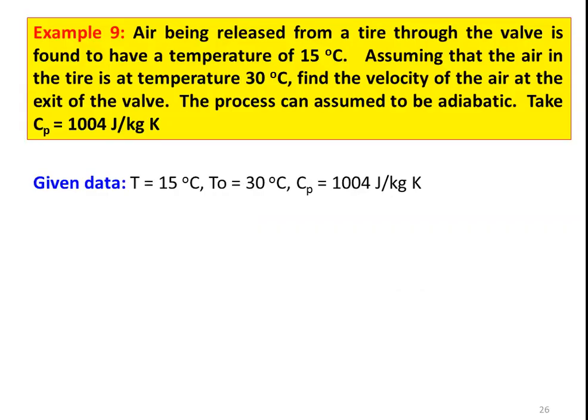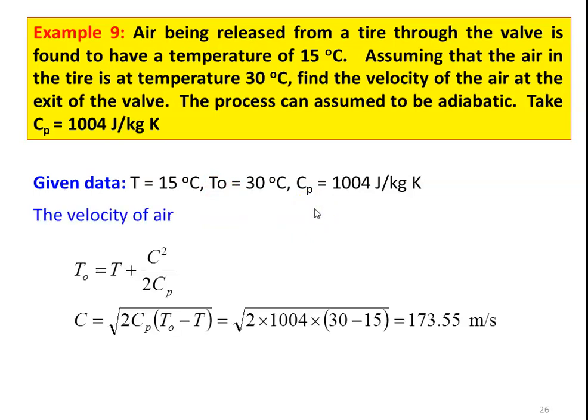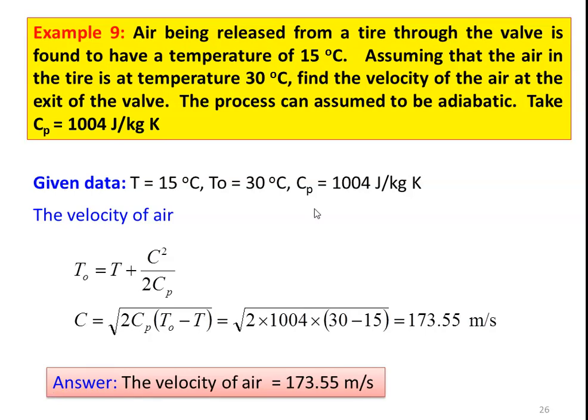Example 9: Air being released from a tire through the valve is found to have a temperature of 50°C. Assume that the air in the tire is at a temperature of 30°C. Find the velocity of the air at the exit of the valve. The process can be assumed to be adiabatic. Take Cₚ = 1004 J/kg·K. From the definition of stagnation temperature, T₀ = T + C²/2Cₚ, rearranging: C = √(2Cₚ(T₀ − T)) = √(2 × 1004 × (30 − 15)) = 173.55 m/s. The velocity of the air is 173.55 m/s.